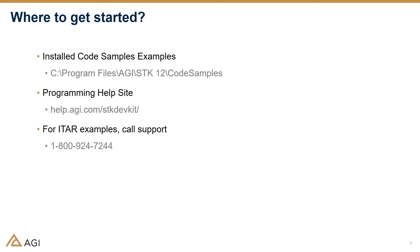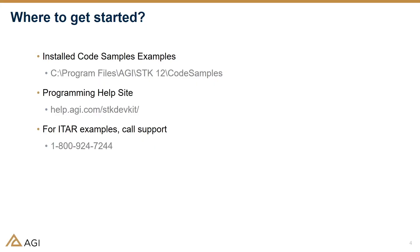Before I dive into examples, let me show you where to get started. There are already examples installed with SDK 12. If you have SDK 12 installed, you already have them on your machine in the code samples folder at the file path shown here. Unzip that and there are Aviator object model examples ready to go. There's also a programming help site with documentation and example code snippets. And we do have some ITAR examples — if you have ITAR products, please call our support line.